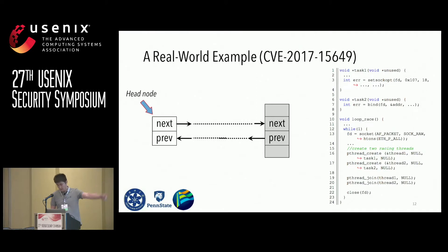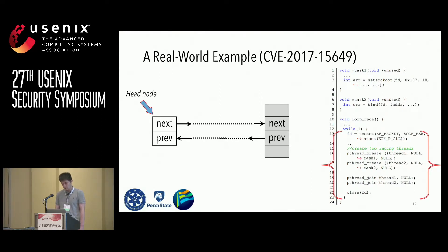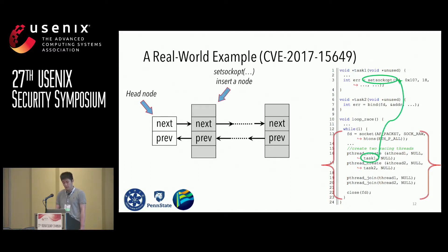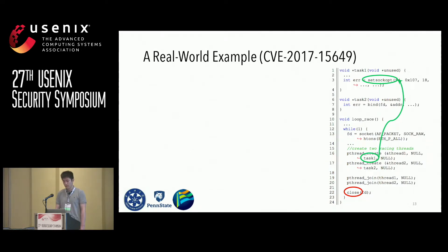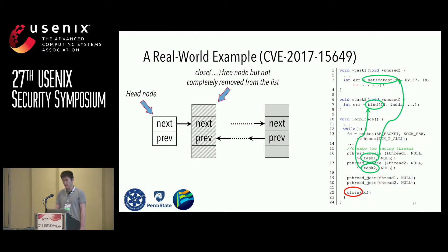On the right-hand side is a code fragment of the POC program. There is an infinite loop. Within this loop it creates a thread, task1. Task1 calls setsockopt — every time this system call is invoked, a new object is allocated and added to a linked list. At the end of the loop, there is another system call, close — every time this is invoked, the newly added object is removed from the linked list. In addition to task1, there is another thread, task2, invoking system call bind. Together with task1, it creates a race condition. The race condition causes close to fail to remove the newly added object from the linked list, leaving a dangling pointer behind.